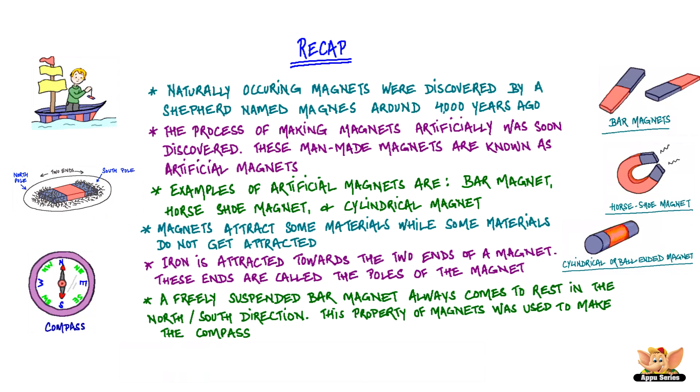A freely suspended bar magnet always comes to rest in the north and south direction. This property of magnets was used to make the compass.